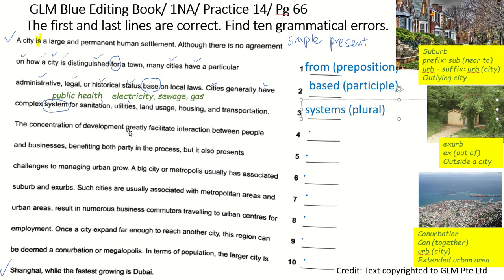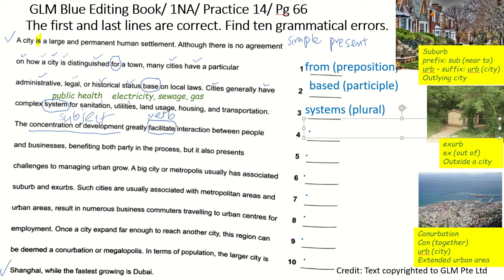The concentration of development greatly facilitates interaction between people. The subject here is 'concentration of development' — that is a singular subject. So we need a singular verb. The singular verb form is 'facilitates' with an S. It should be singular verb.